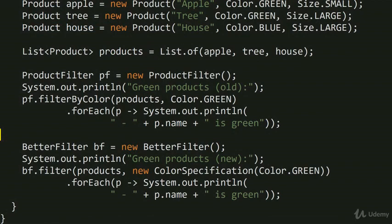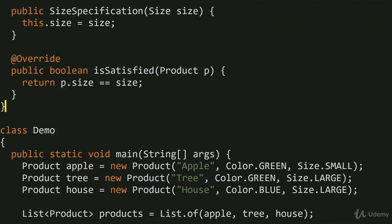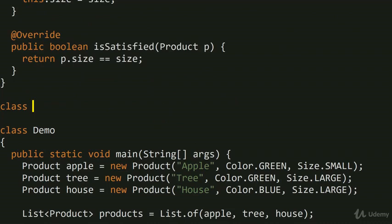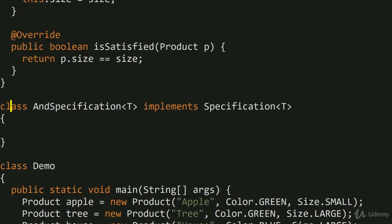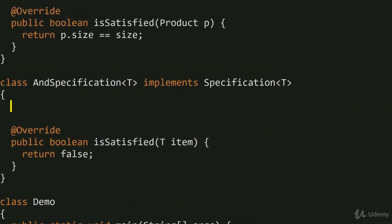You don't change the binary interface; you just use inheritance and implementation of interfaces, which is much more flexible. Now you might wonder how we check that we satisfy both color and size. This is easy — we make a combinator. We create a class AndSpecification<T> that implements Specification<T>, combining two specifications together using private members Specification<T> first and second, initialized via a constructor.